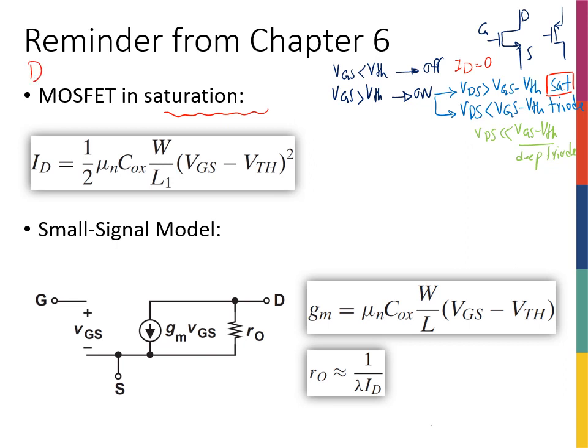This is the DC analysis of the transistor or DC operation of transistor. We can see that ID equals, if I write it in simpler format, K divided by two times VGS minus VTH squared.